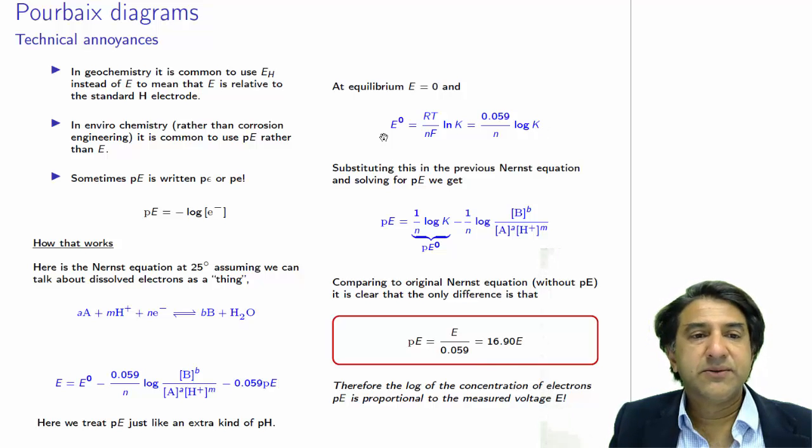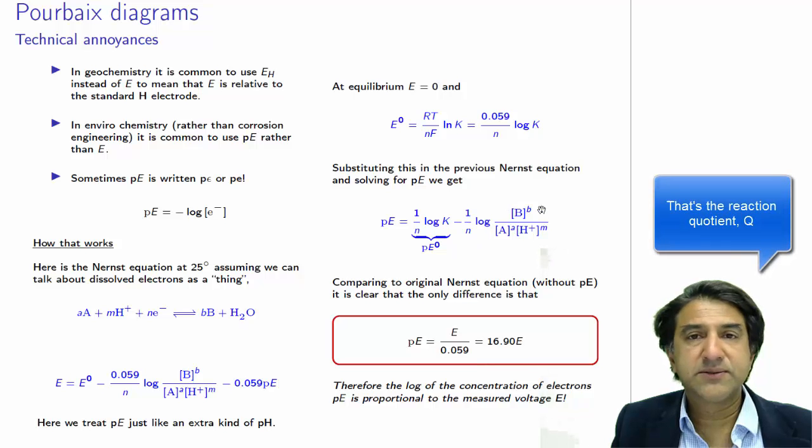Let's substitute this E0 quantity back into the Nernst equation that we have had involving the electron concentration. So we whack that into there, and we would get 0.059 on N log K. Let's divide the whole equation by 0.059 and rearrange for PE. And the 0.059 will drop out, and we get PE equals 1 on N log K minus 1 on N log this quantity, some series of concentrations.